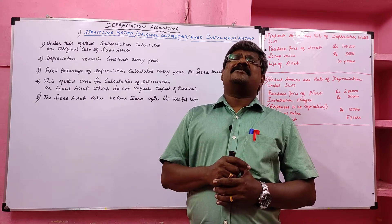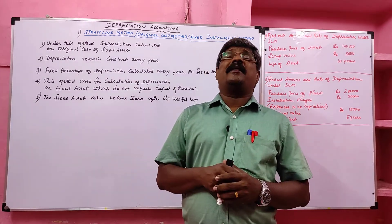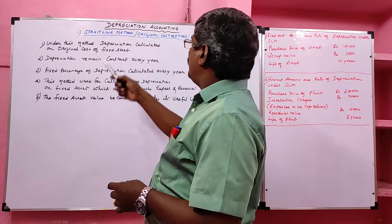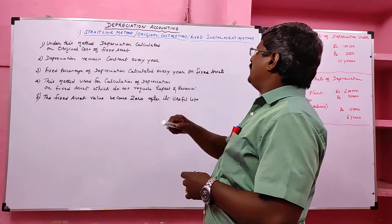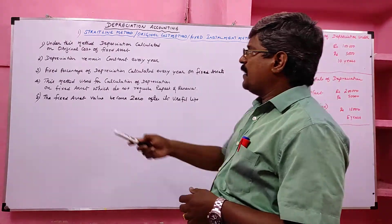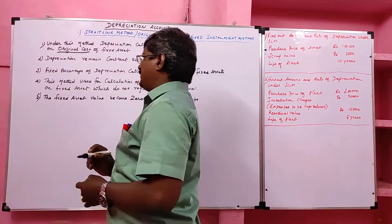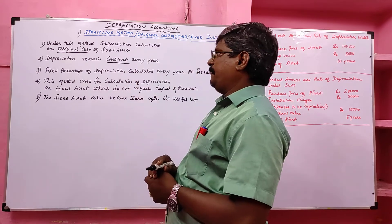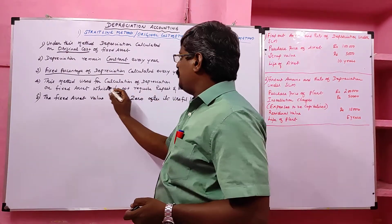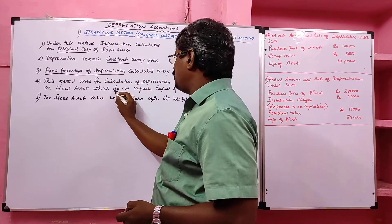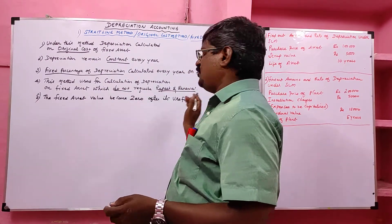This method is used for fixed assets that do not require repair and renewal. It is also called the Original Cost Method or the Fixed Installment Method. Depreciation remains fixed every year, calculated as a fixed percentage on the original cost, and the fixed asset value becomes zero after its useful life.